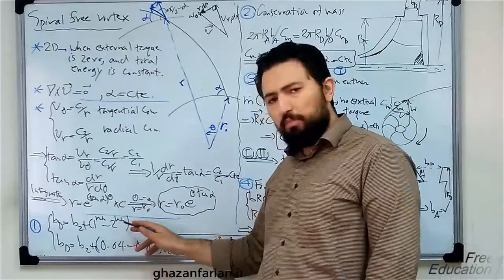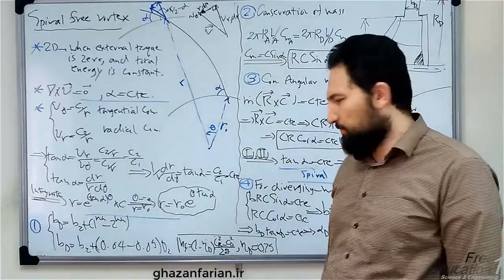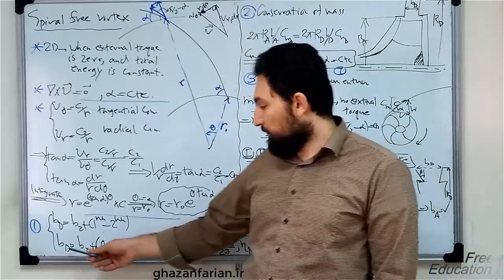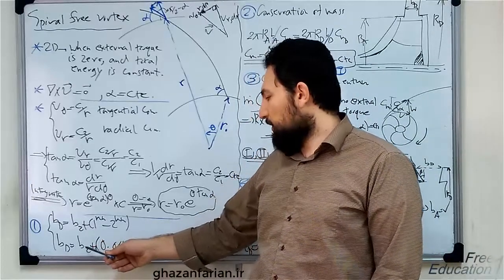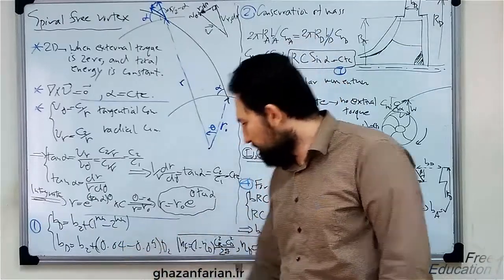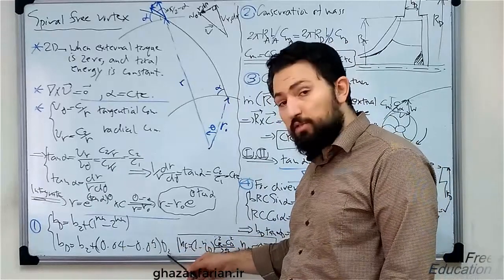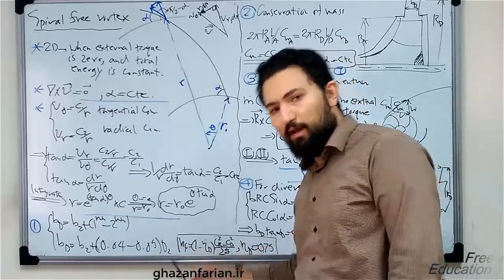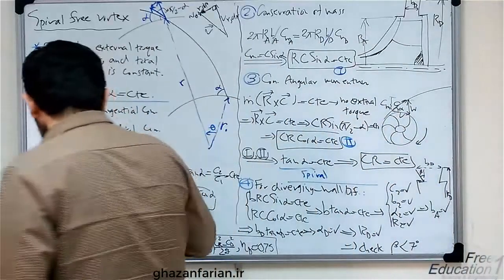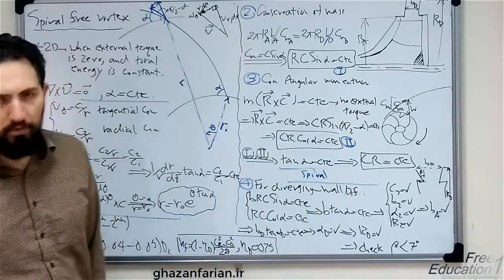One millimeter to two millimeters larger than the width of the blades at the outlet is a good suggestion. The second relation indicates that the width of the diffuser equals the width of the blades at the outlet plus 4% or 5% of the diameter of the impeller at the outlet. Both of them can be used, and this way you have computed the first geometrical parameter of the diffuser.